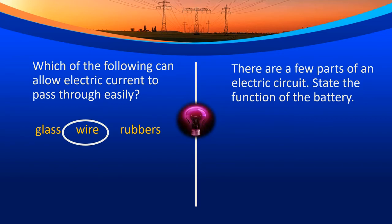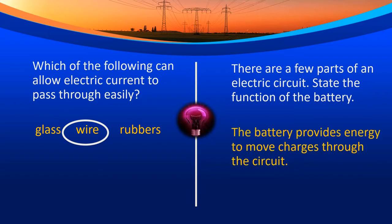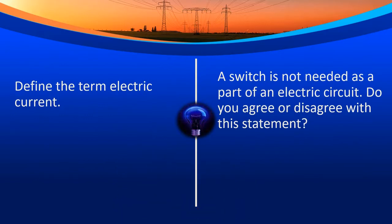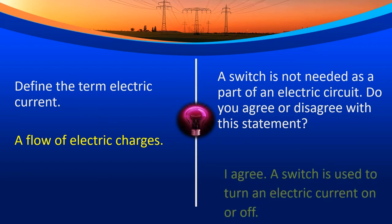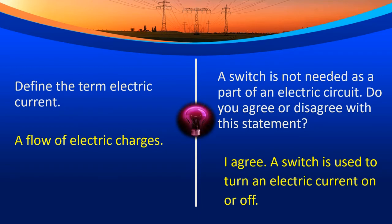There are a few parts of an electric circuit. State the function of the battery. The battery provides energy to move charges through the circuit. Very good. Define the term electric current. A flow of electric charges. You are correct. A switch is not needed as part of an electric circuit — do you agree or disagree? A switch is used to turn an electric current on or off. Very good.